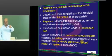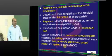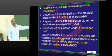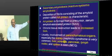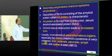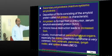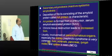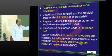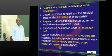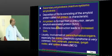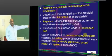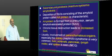Viscera of parenchymatous origin are affected in secondary amyloidosis — like the kidney, which is involved rarely in primary but more commonly in secondary amyloidosis. Nephrotic syndrome is very common when the kidney is involved. Other organs include the liver, adrenals, pancreas, lymph nodes, and spleen. Sago spleen is more common in secondary amyloidosis.